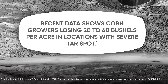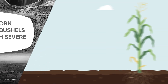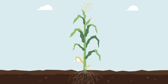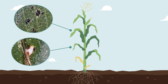Tar spot is a foliar corn disease that has recently emerged as an economic concern for corn growers. Symptoms include black oval or circular lesions developing on the corn leaf, hence the name tar spot.